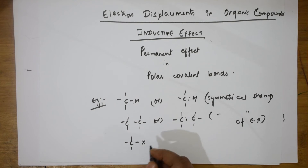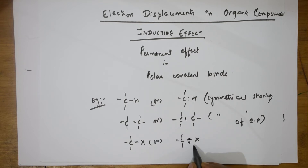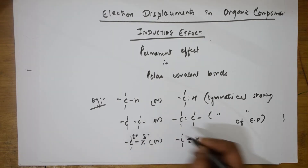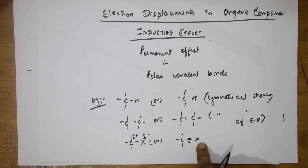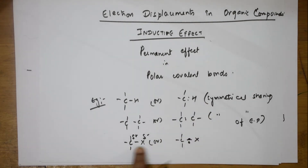However, if an electronegative atom X is present — for example, a halogen — it will drag the electron density towards itself. This results in a partial positive charge on the carbon and a partial negative charge on X. So, here we have unequal or asymmetrical sharing of the electron pair, unlike the equal sharing seen in C-H and C-C bonds.